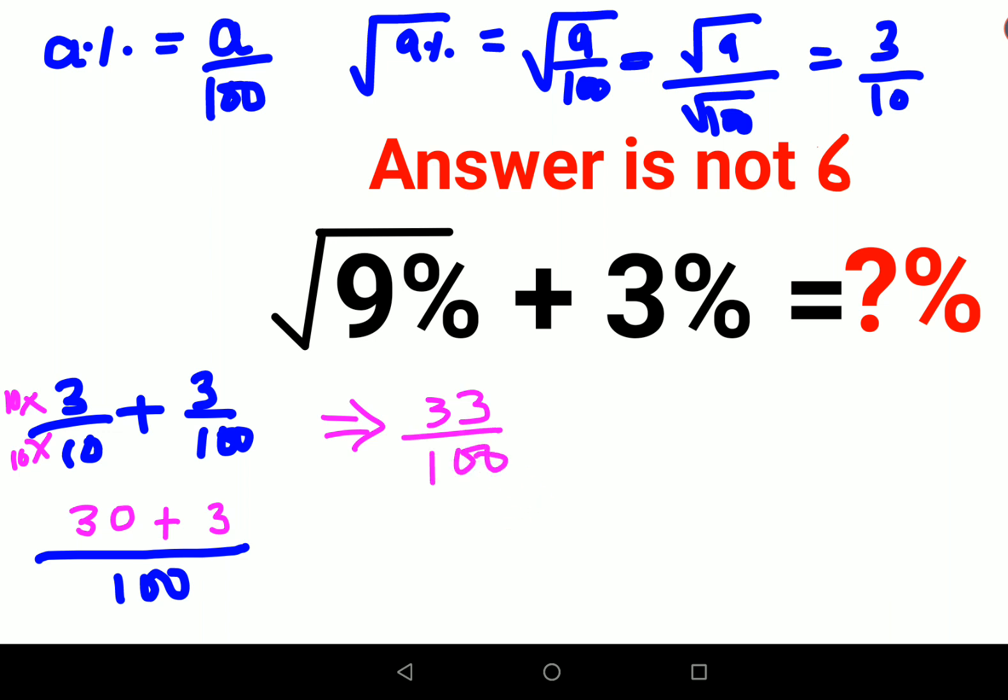So you see if the percentage sign was not given, you could have written this as your answer or you could have said this is 0.33. That would have been fine. But if there is a percentage sign involved,